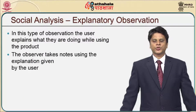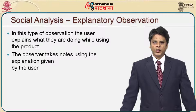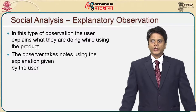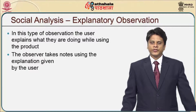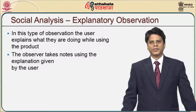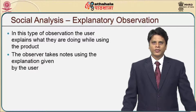The third type of social analysis is explanatory observation, where the user explains what they are doing while using the product. The observer takes note using the explanation given by the user. Whenever they are trying to work with the machine or product, they give a clear set of explanations on the effectiveness of the particular software or product simultaneously, and these notes are helpful for analysis.